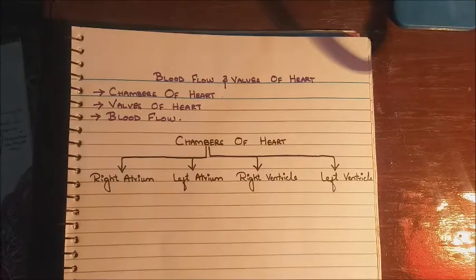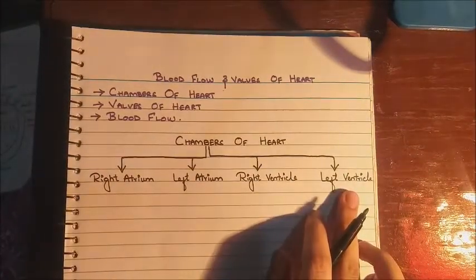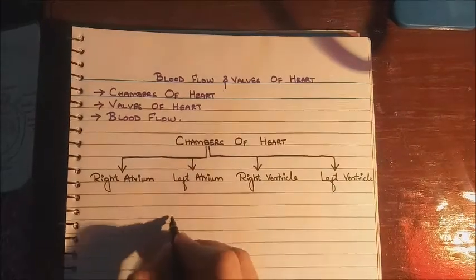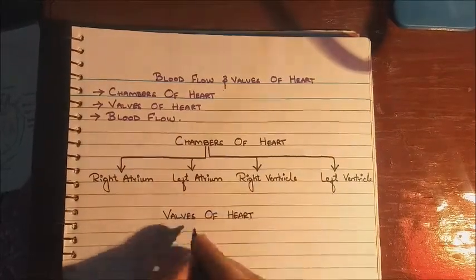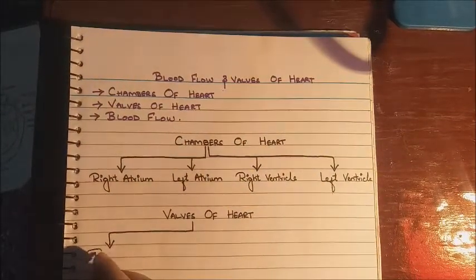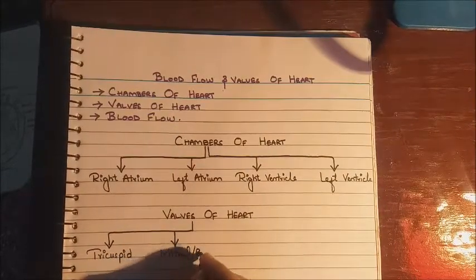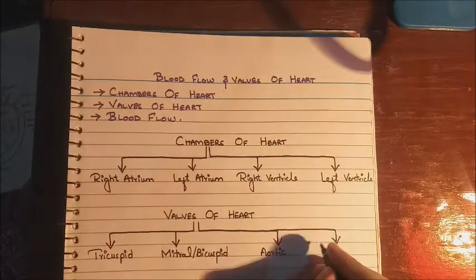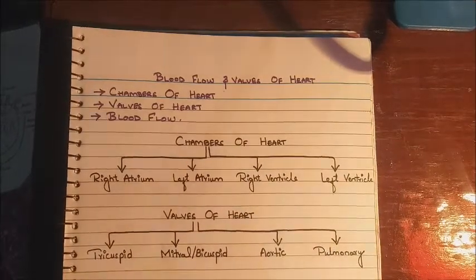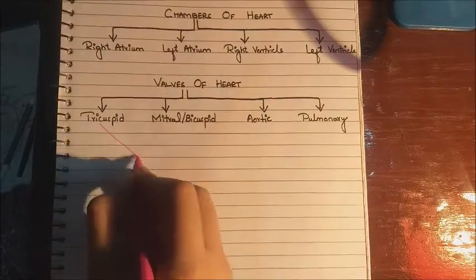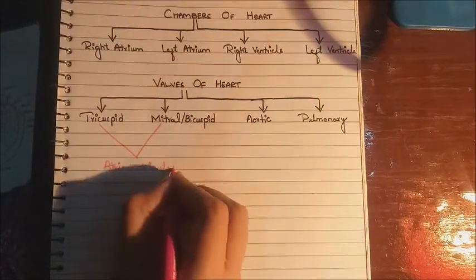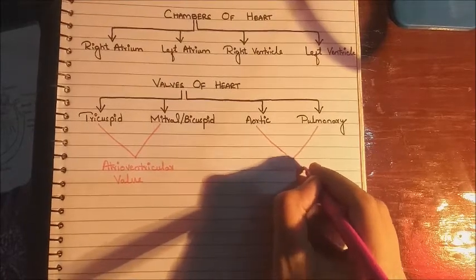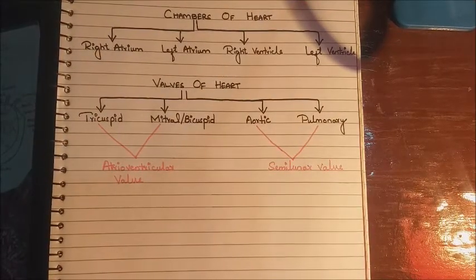After discussing the four chambers of the heart, we will discuss the valves of the heart. The heart consists of four valves which prevent the backward flow of blood. These are named tricuspid, mitral or bicuspid valve, aortic valve, and pulmonary valve, also known as pulmonic valve. The tricuspid and mitral valves are known as atrioventricular valves because they are located between the atrium and ventricle, while the aortic and pulmonary valves are known as semilunar valves because their shape is like a half moon.